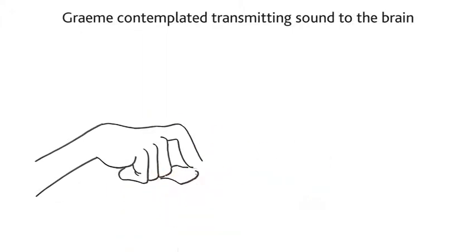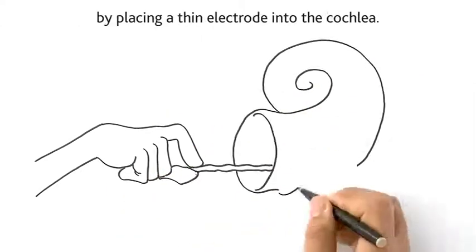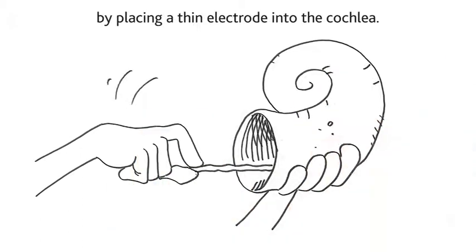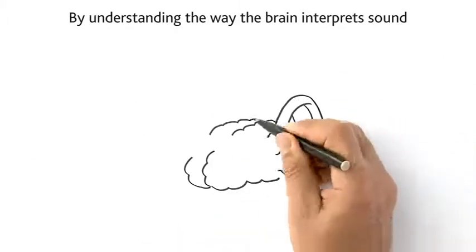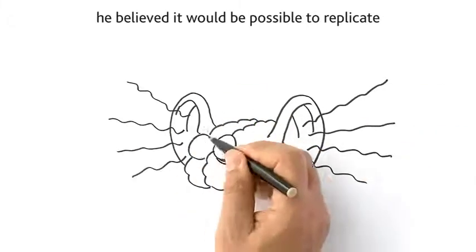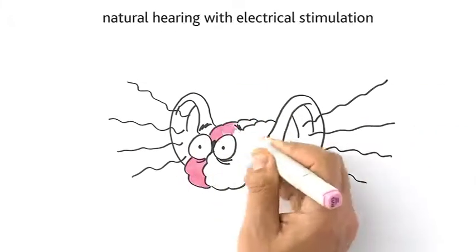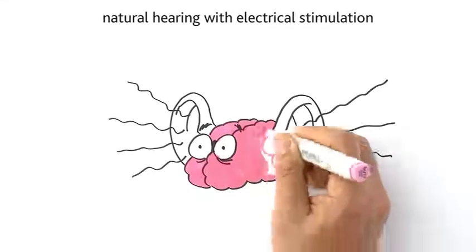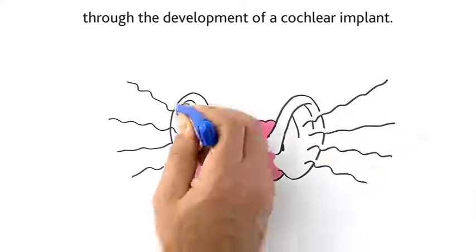Graham contemplated transmitting sound to the brain by placing a thin electrode into the cochlea. By understanding the way the brain interprets sound, he believed it would be possible to replicate natural hearing with electrical stimulation through the development of a cochlear implant.